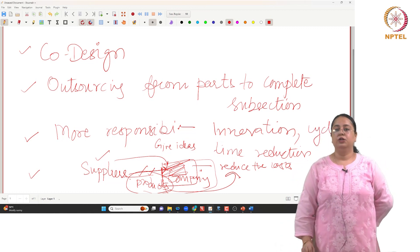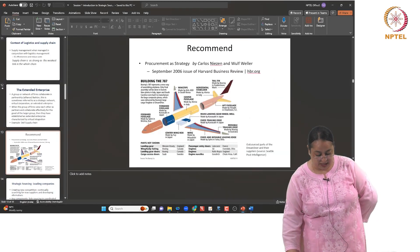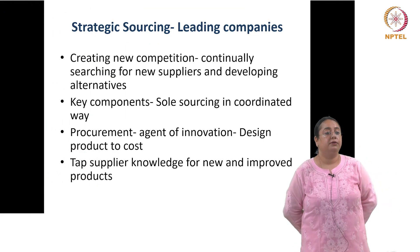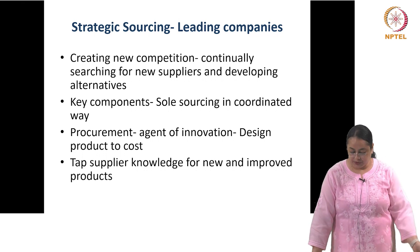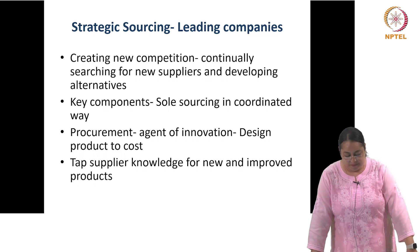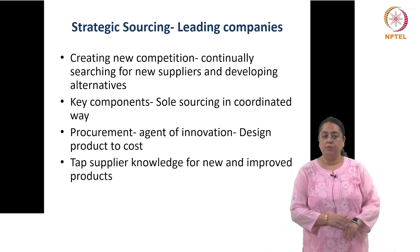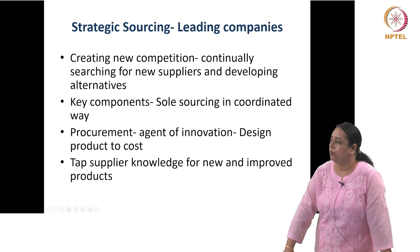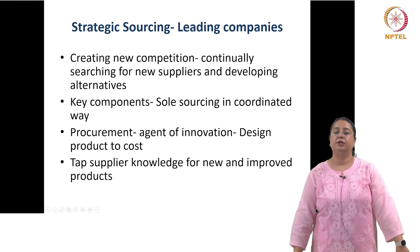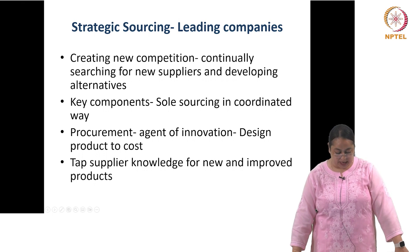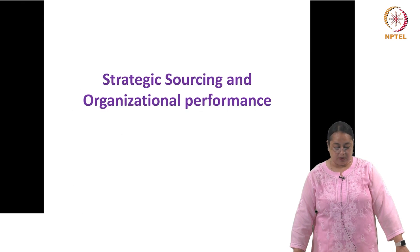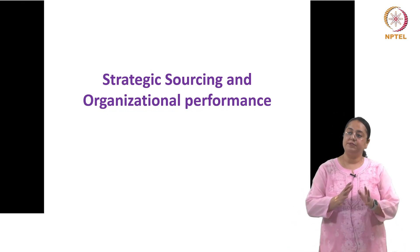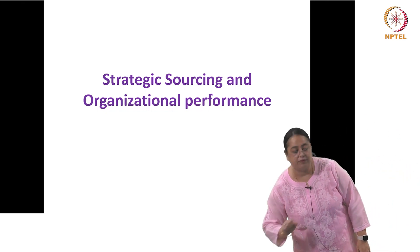Moving to what leading companies do: they create new competition by continuously searching for new suppliers and developing alternatives. They have moved from sole sourcing to a more coordinated way of sourcing. They consider sourcing and procurement as agents of innovation, design products to cost — focusing on how to reduce cost and bring in the new — and tap supplier knowledge for new and improved products. This is how strategic sourcing is viewed in today's era.